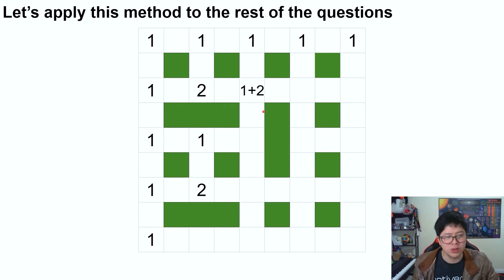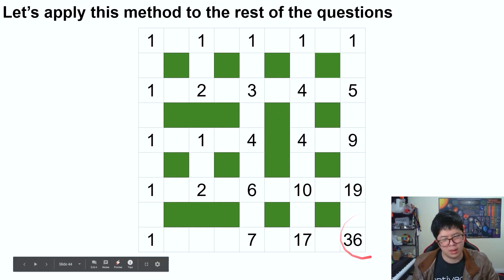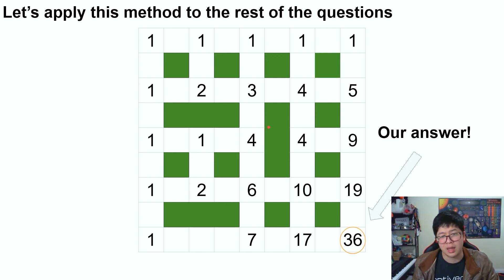And this may seem like a daunting number of calculations, but in reality, this is a lot less than if you try to systematically list every single path. And as you can see, we have our answer, which is 36. And this is the official answer. And it's correct.